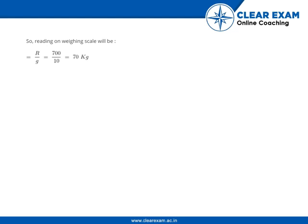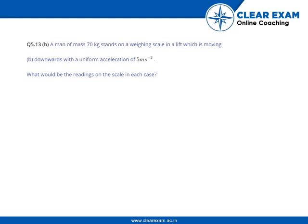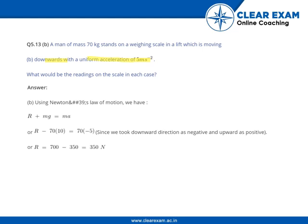So the reading on the weighing scale will be R divided by gravity, that is 700 divided by 10, that is 70 kg. In the second scenario, the lift is moving downwards with a uniform acceleration of 5 meters per second squared. What would be the reading on the scale?